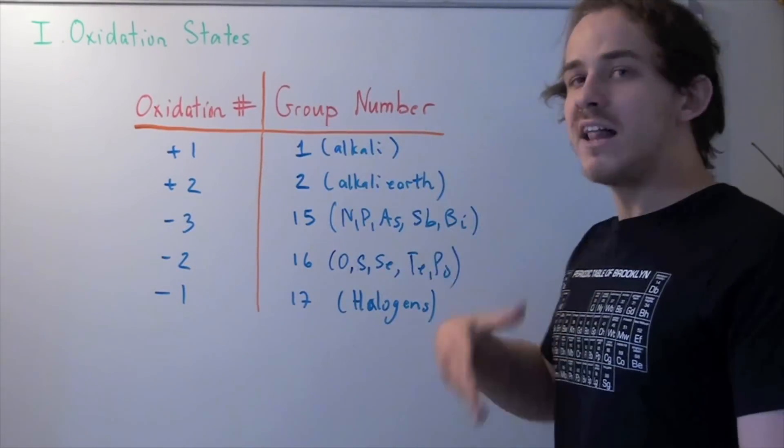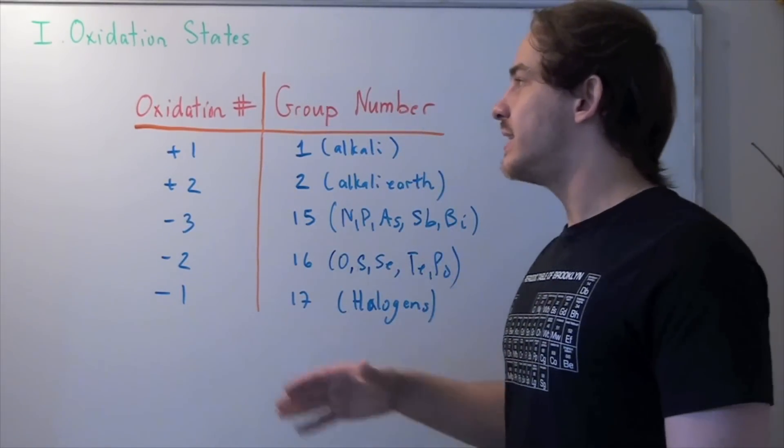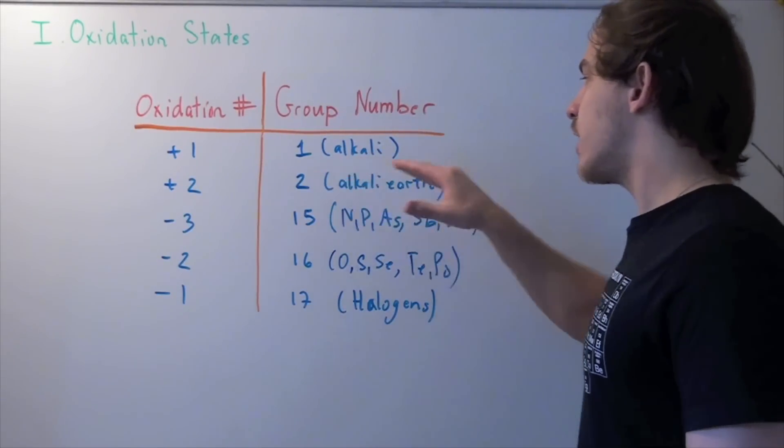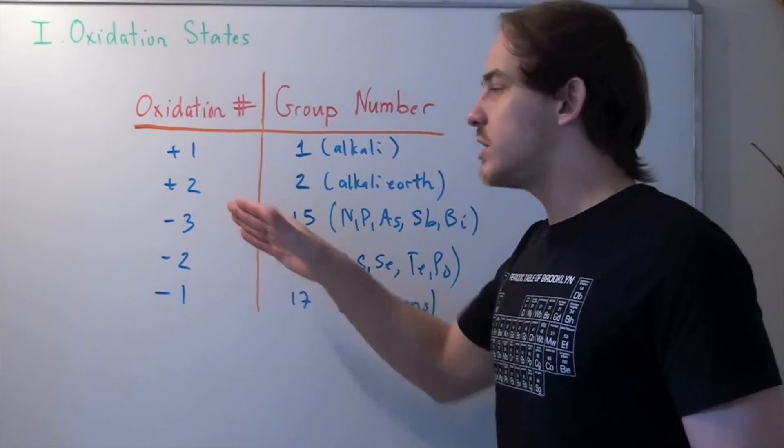Group number one, the alkali metals, are assigned an oxidation state of plus one. Group number two, the alkali earth metals, are assigned an oxidation state of plus two.